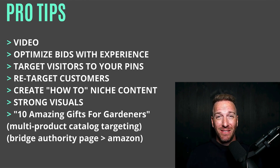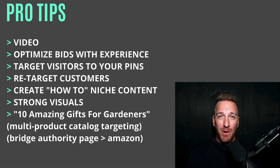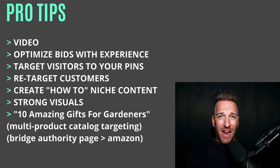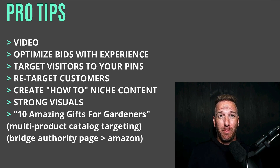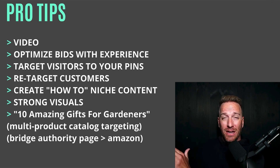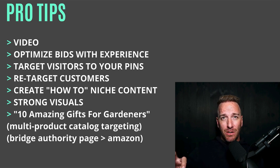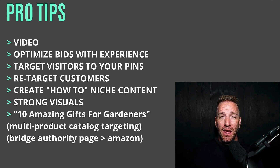Create how-to niche content and plug in your product and brand as a solution. A lot of people type in how-to oriented, tips for, or DIY oriented stuff — tap into people seeking that information and inject your brand and products using pins and cool content to promote that. Strong visuals matter — don't put up crappy photos because you'll get crappy results. Use really cool, stunning imagery, which you should have in your Amazon brand to begin with. You might also want to do external content on your Shopify blog, like '10 amazing gifts for gardeners,' and then have your whole catalog as options for them to click through.